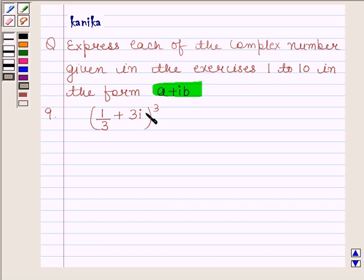9th part is whole cube of 1 by 3 plus 3 iota. Before solving this question, we should know that whole cube of A plus iota B is equal to A cube minus 3B square A plus iota 3A square B minus iota B cube. This is the key idea in this question.